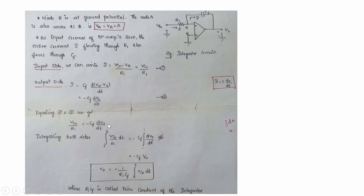Equating equations 1 and 2: Vin/R1 = −Cf × dVo/dt. Integrating both sides from 0 to t: the integral of Vin/R1 dt equals −Cf × integral of dVo. Since the integral of dVo is Vo, rearranging gives Vo = −(1 / R1·Cf) × ∫₀ᵗ Vin dt. The output voltage is the integration of the input voltage, the minus sign represents 180-degree phase shift, and R1·Cf is the time constant.